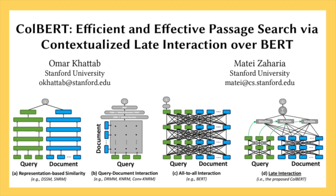ColBERT uses a two-stage procedure for end-to-end retrieval. First, it performs an approximate search using a vector similarity index, like FAISS, to filter down the document collection. Then, it re-ranks the remaining candidates using the late interaction mechanism, allowing for efficient retrieval from large collections while maintaining high accuracy.